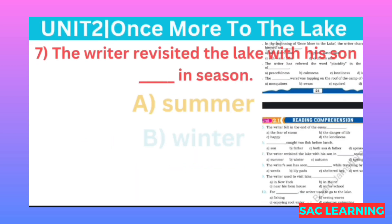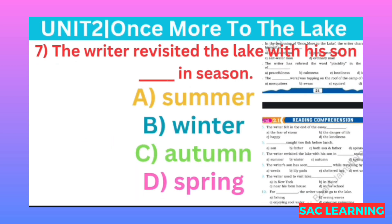Number seven: The writer revisited the lake with his son in which season? (Musnif ne kis mausam mein apne bete ke saath phir se jheel ghumne gaye?) Option A: summer, B: winter, C: autumn, D: spring. Correct option is A, summer.